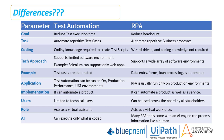Test automation can run on QA, production, performance, and UAT environments, whereas RPA only runs on production environments. For implementation, test automation can automate a product, whereas RPA can automate a product as well as a service. Test automation is used by limited technical users, whereas RPA can be used across the board by all stakeholders. Test automation acts as a virtual assistant, whereas RPA acts as a virtual workforce. Finally, regarding AI, test automation can only execute what is coded, whereas RPA tools come with an AI engine and can process information like a human.